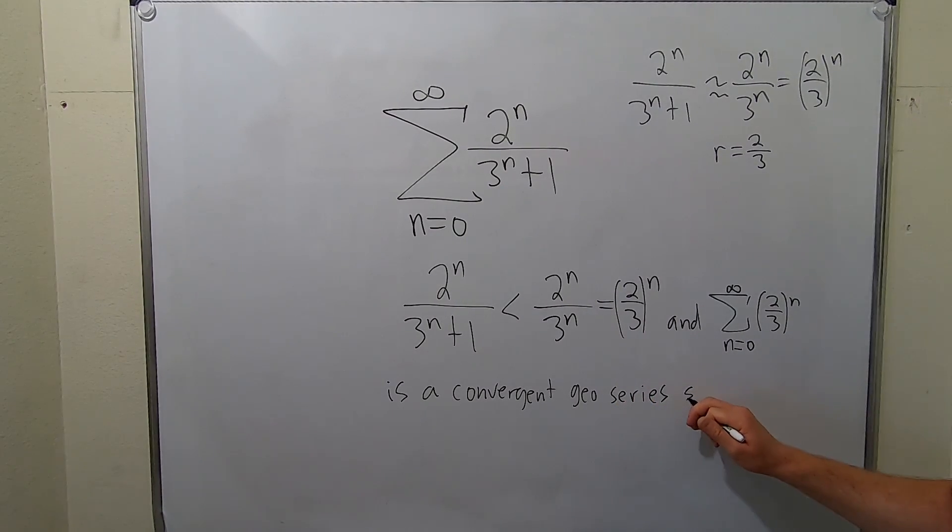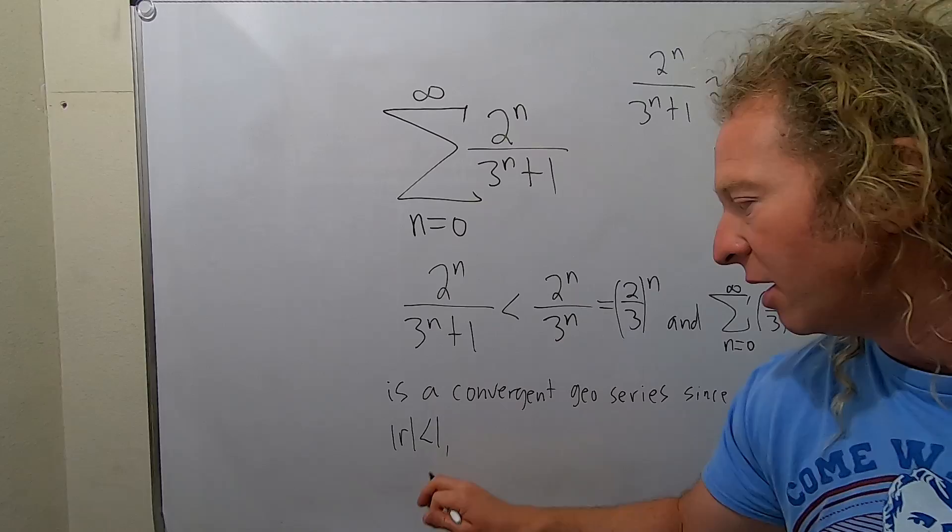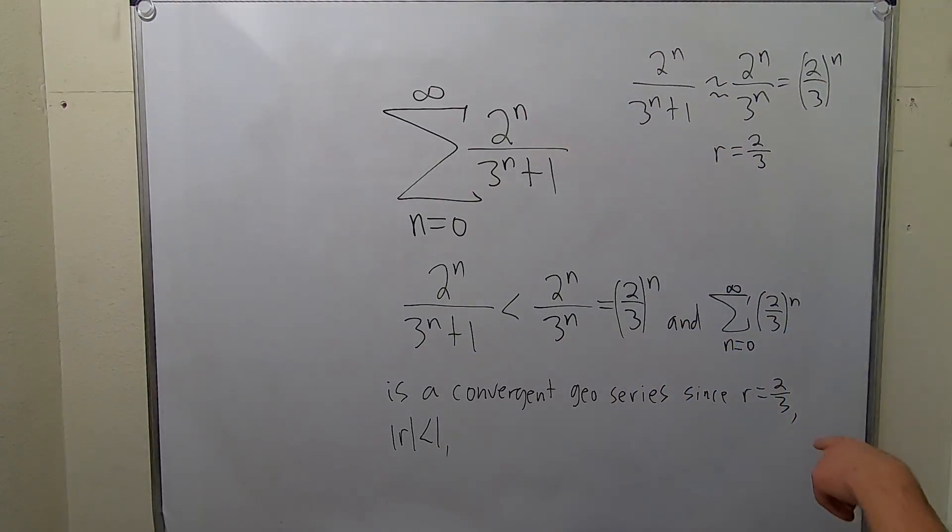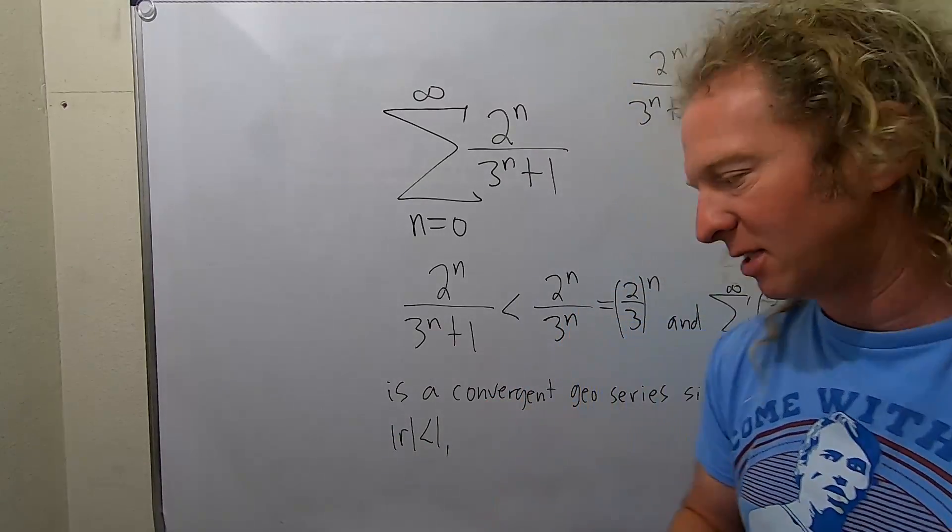and let's explain why, since r is 2 thirds. And let's be really pedantic here. The absolute value of r is less than 1. The reason I did that is because sometimes r could be negative, so r is like negative 2 thirds. So you really want to emphasize that in absolute value it has to be less than 1.